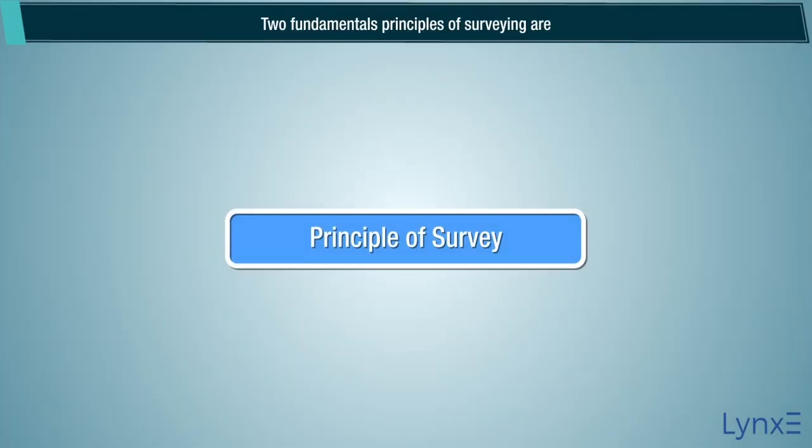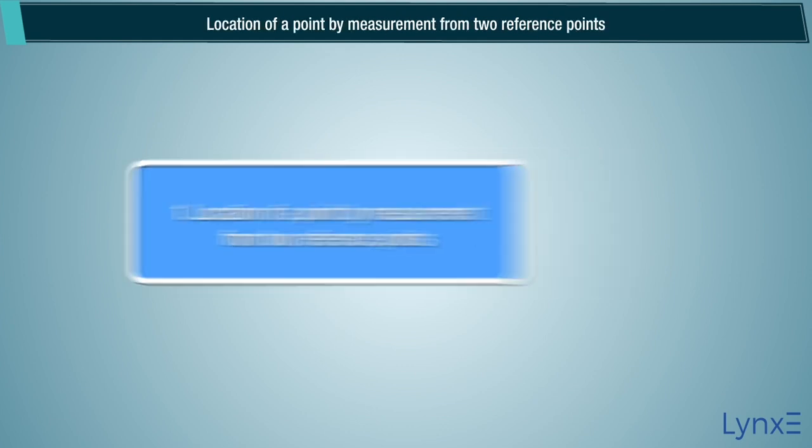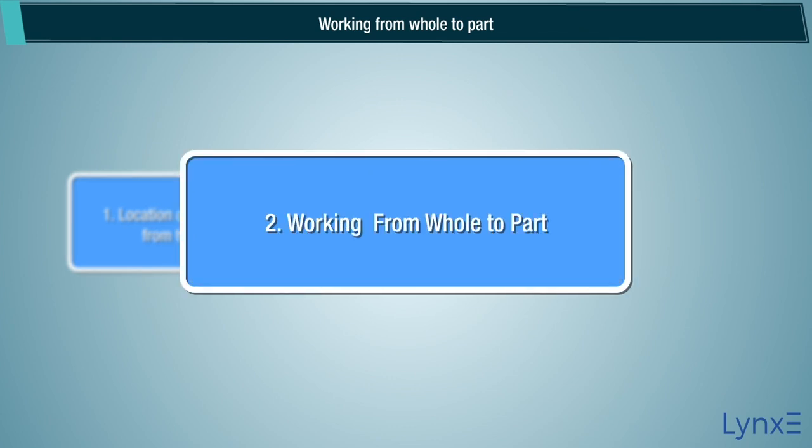Principle of Survey: Two fundamental principles of surveying are location of a point by measurement from two reference points, and working from whole to part.